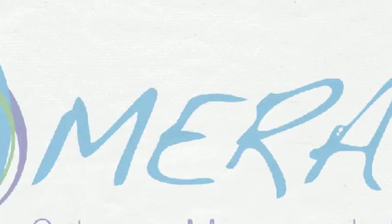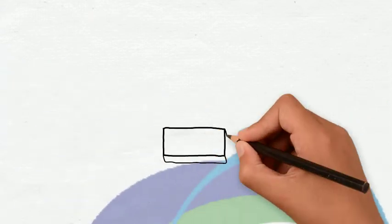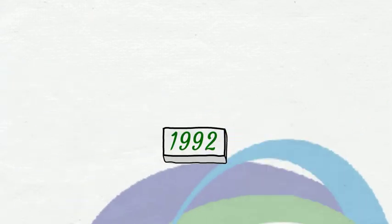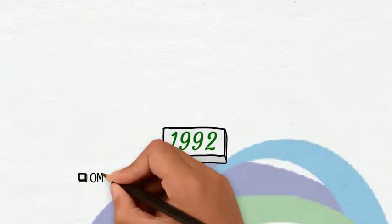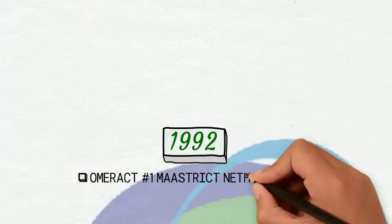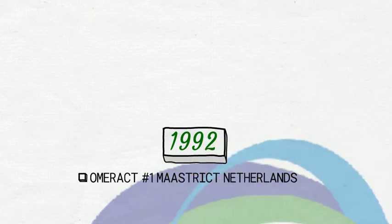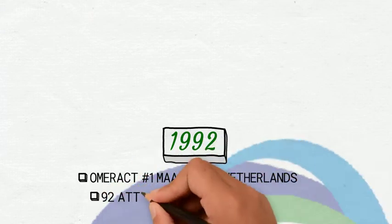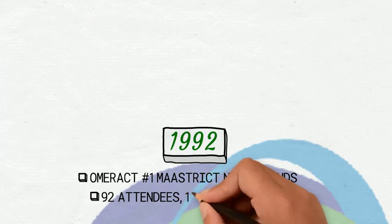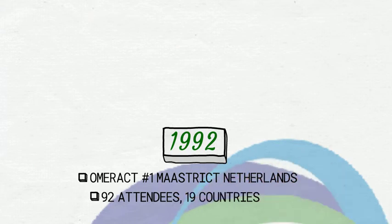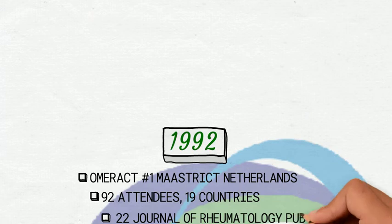Hello everyone, today I'd like to give you an overview of the history of OMERACT. Originally called Outcome Measures in Rheumatoid Arthritis Clinical Trials, the first OMERACT conference was held in Maastricht, Netherlands in 1992 and addressed the ongoing challenge of improving the accuracy and responsiveness to change of clinically relevant endpoints.